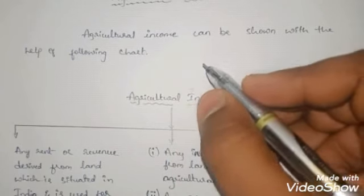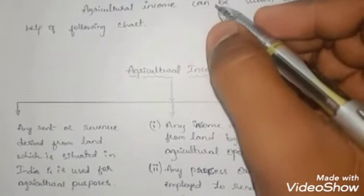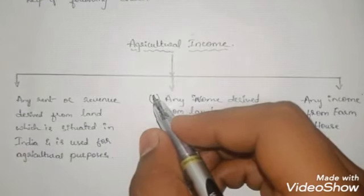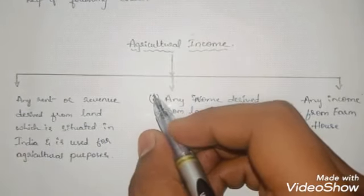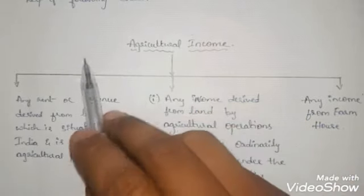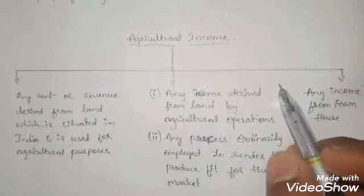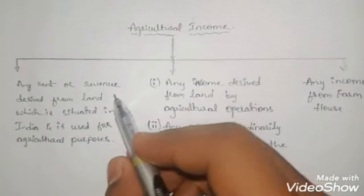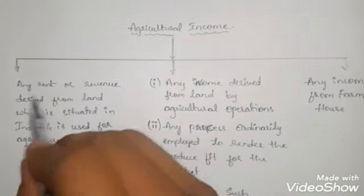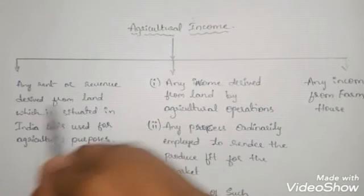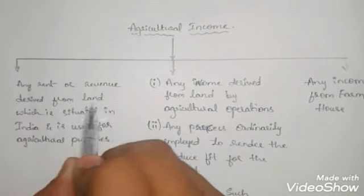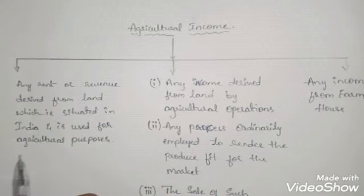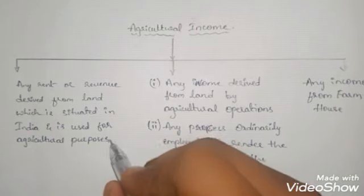Now let us try to understand what is meant by agricultural income. It can be shown with the help of the following chart. The first type is any rent or revenue derived from land which is situated in India and used for agricultural purpose.